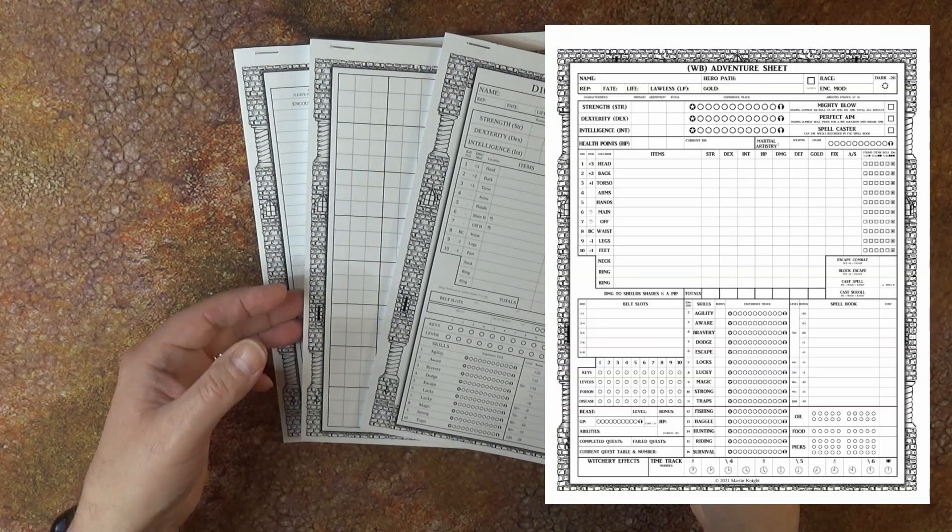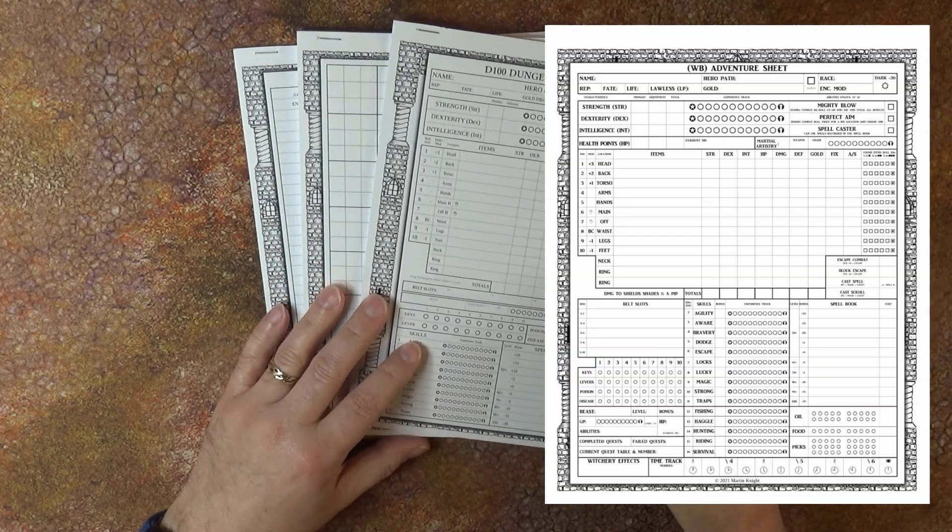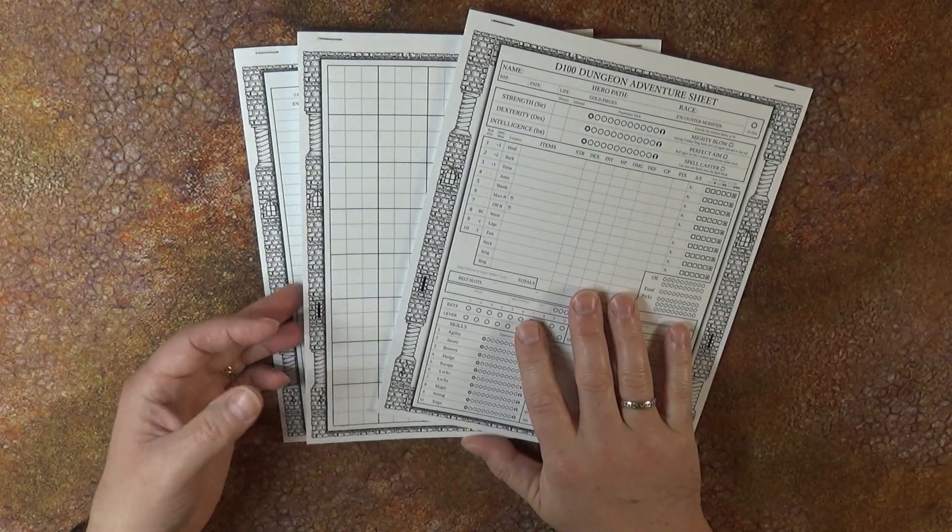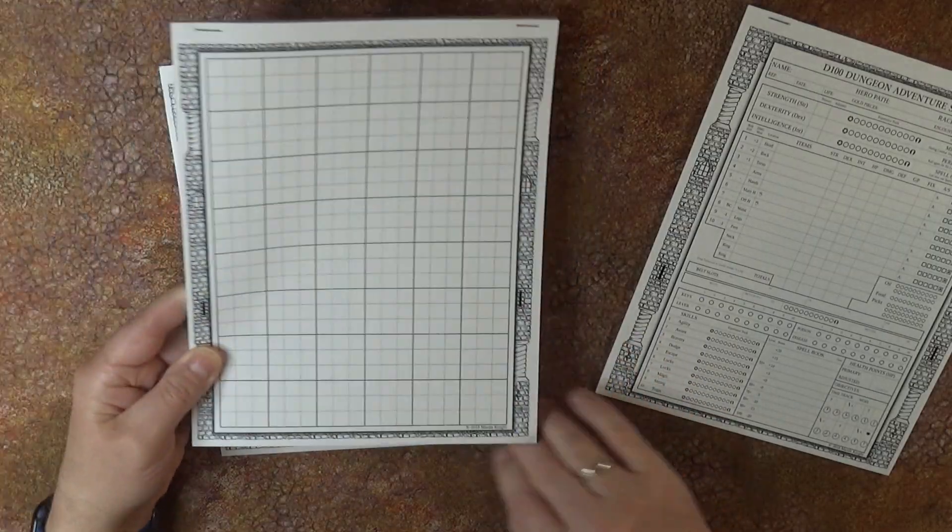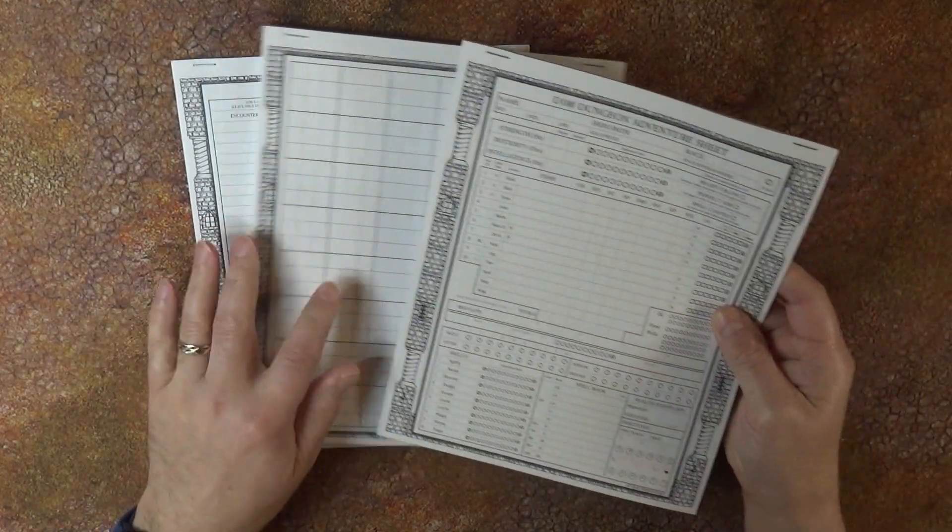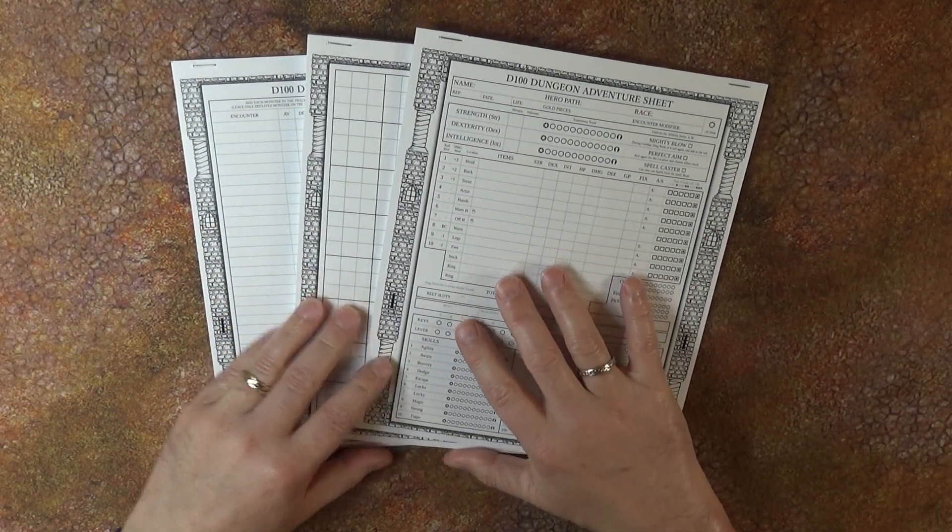These are also available individually as well. So if you end up needing to replace your dungeon sheets or your combat tracks, or you want some more adventure sheets but you've got the others, you can go ahead and order them individually.